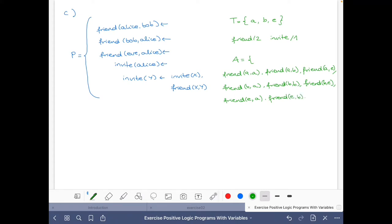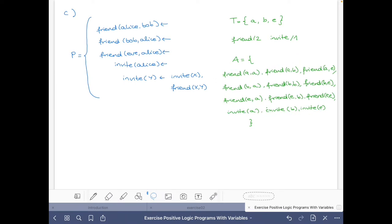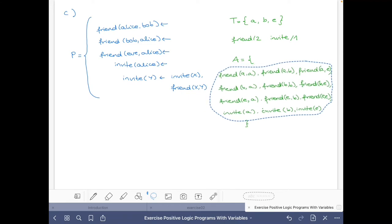And we also have the ones for invite, which are just three because invite only has one argument, invite A, invite B, and invite E. Let me move it a bit more to the left so that things fit correctly. So this was the Herbrand base.